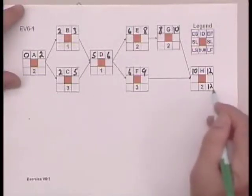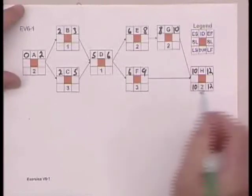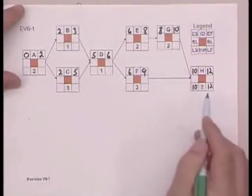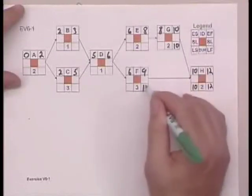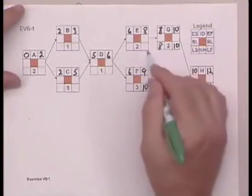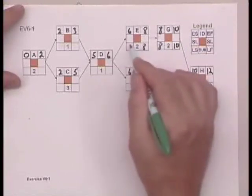So, 12 minus 2 is 10, and so unlike going forward, we subtract going backwards. Pass the numbers back, subtract, pass, subtract.